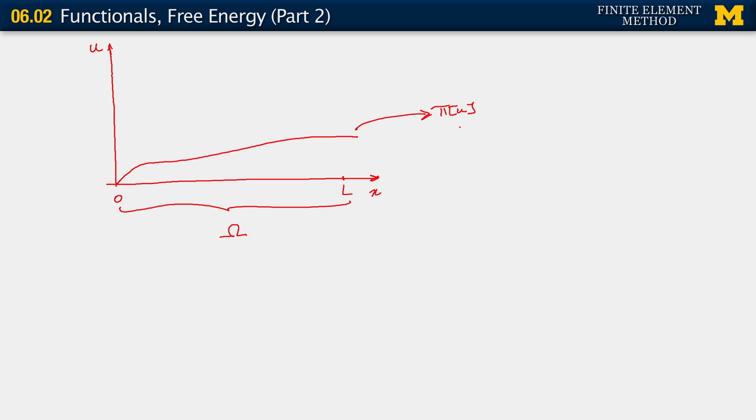Now, if instead of this displacement field, we were to have a different field, which I will use green for. So you may have some other field, also satisfying the same boundary condition. But perhaps our field is this one. And from here, we would get a different pi of u. Maybe I should call this u2 and the original field u1.